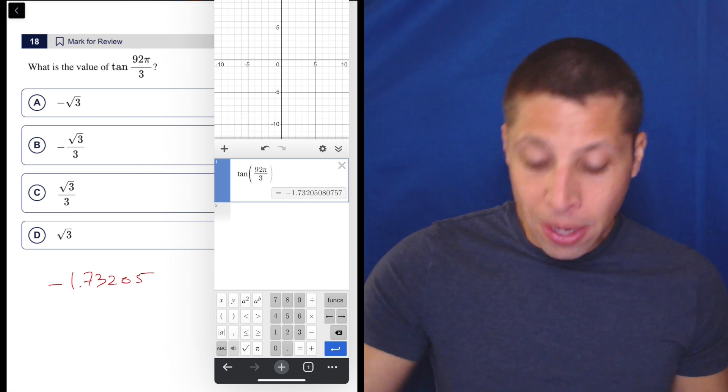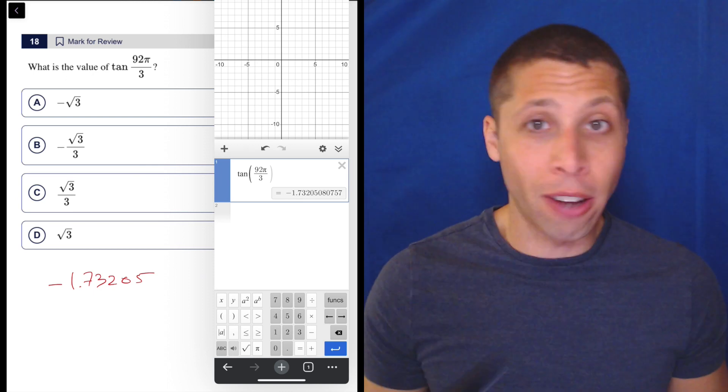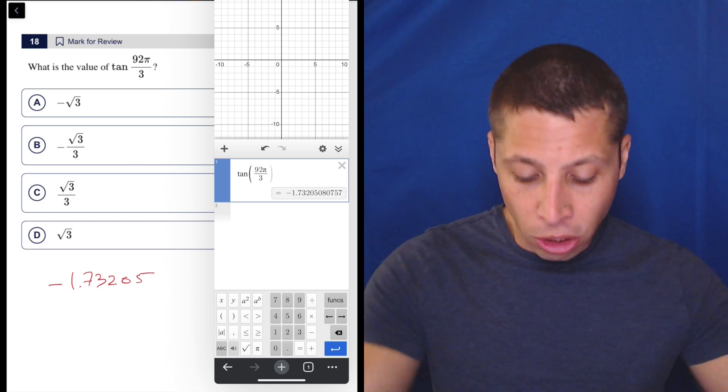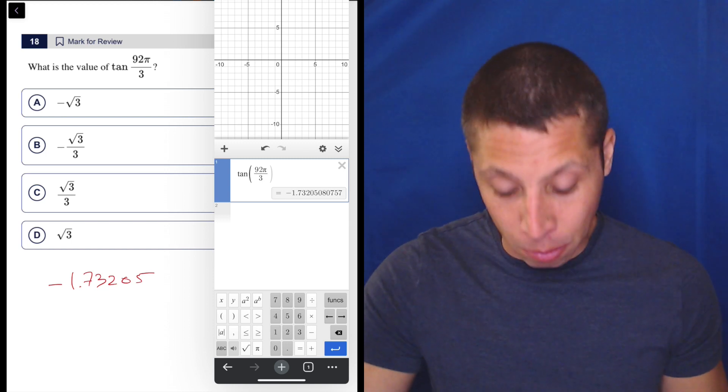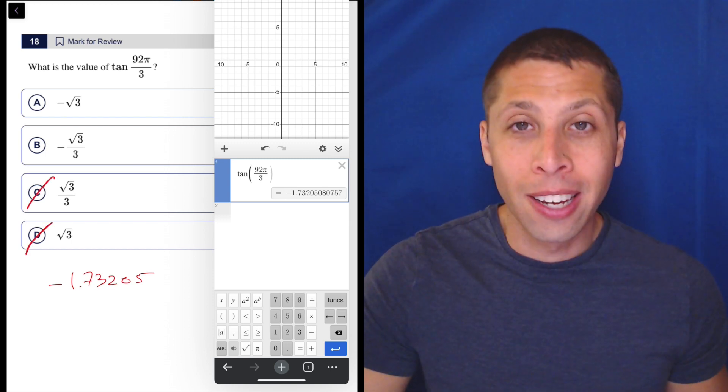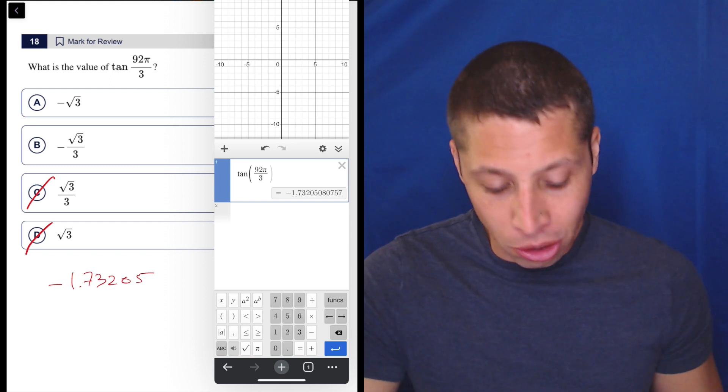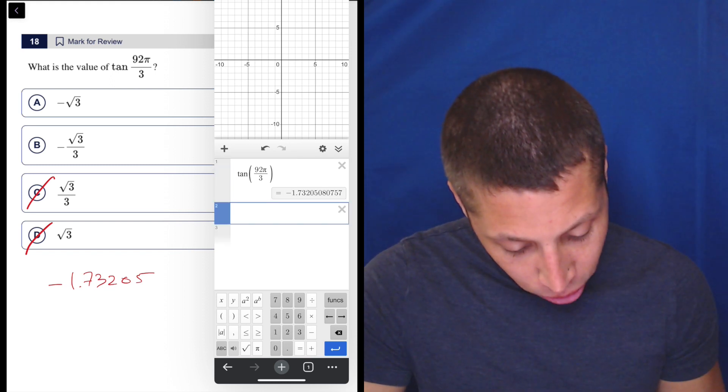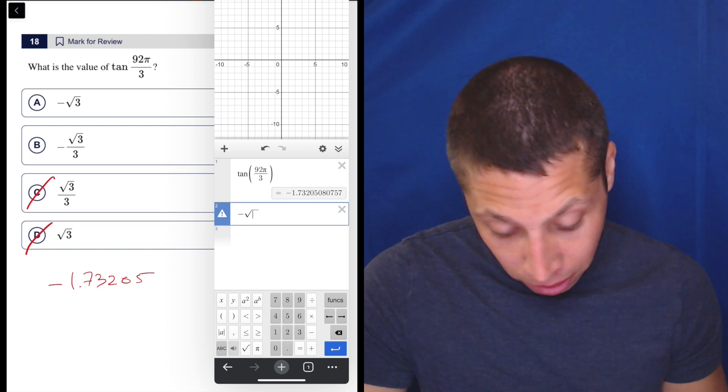From here you could go to one of these calculators and just use that. We're just going to see which ones give us that decimal. We know already it's not C or D because we need a negative number. So what is the square root? I'll put the negative, but I don't need to—I understand what I'm doing here.